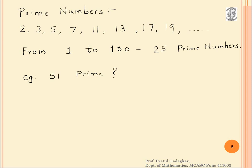51 is not a prime number because 51 = 17 × 3. Similarly, if we look at 57, one might think 57 is also a prime number, but that is not correct. 57 = 19 × 3, so 57 is divisible by both 19 and 3, and therefore 57 is not a prime number.